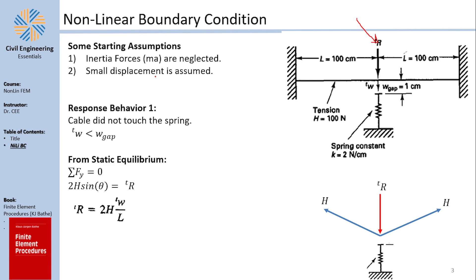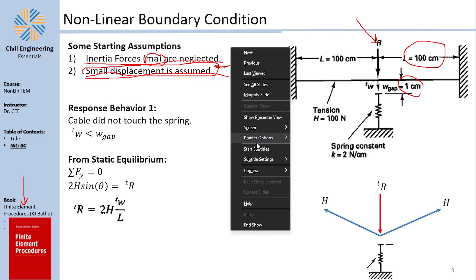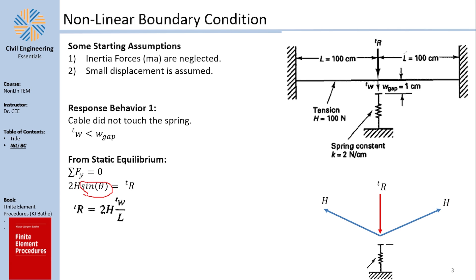The starting assumptions are: first, inertia forces (ma) are neglected; second, small displacements are assumed. I'm not fully sure that assumption is valid — 1 centimeter relative to 100 centimeters seems not that small — but we'll stick with Professor Bathe's assumption. If the displacement were large, something would change, specifically the sine theta term, which I'll explain shortly.